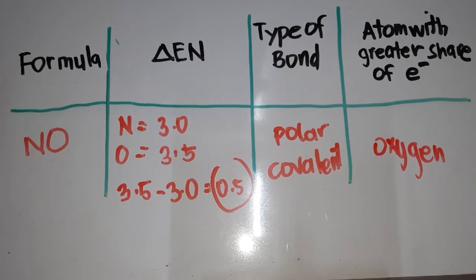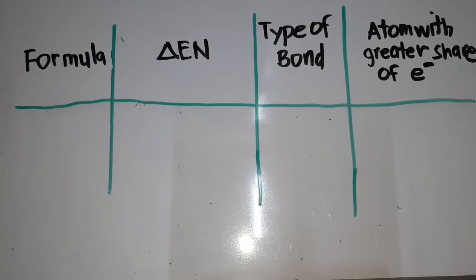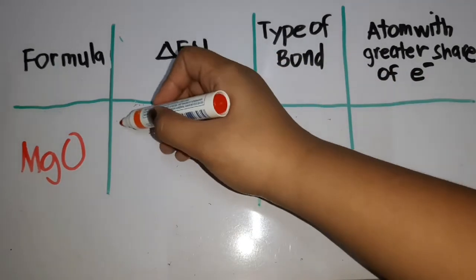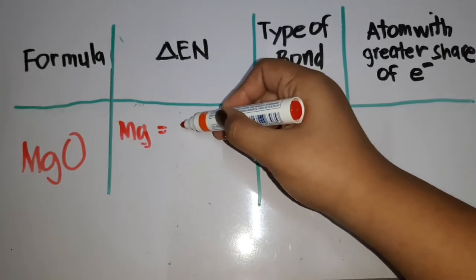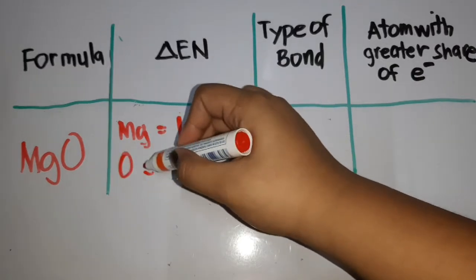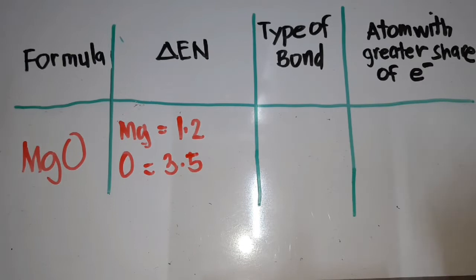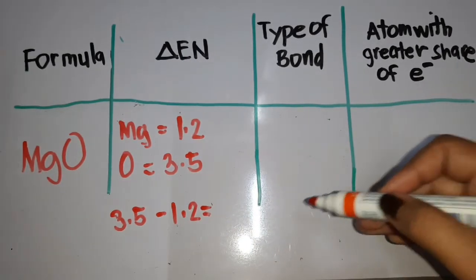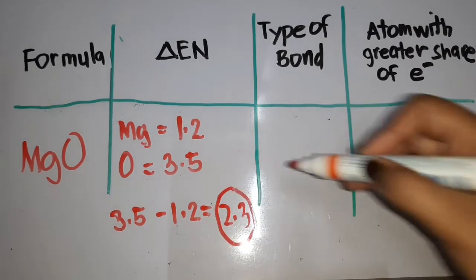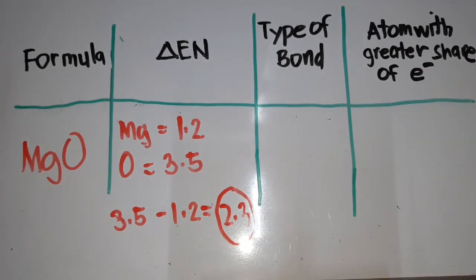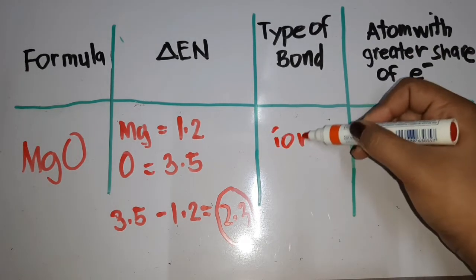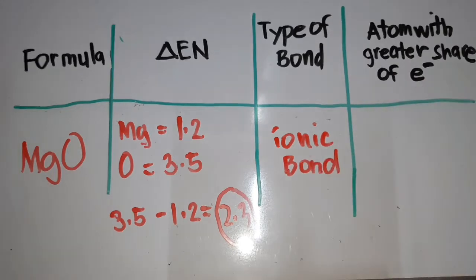Since the electronegativity difference is 0.5, it falls under polar covalent bond, and the atom with the greater share of electrons is oxygen. Next, we have magnesium and oxygen. The electronegativity of magnesium is 1.2 and oxygen is 3.5. The solution is 3.5 minus 1.2, which equals 2.3. Since 2.3 is greater than 1.7, the type of bond between magnesium and oxygen is ionic bond.